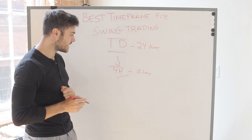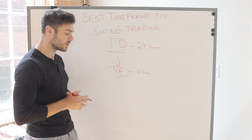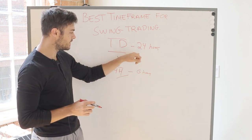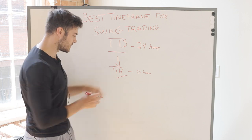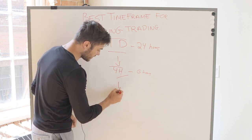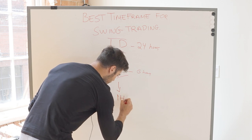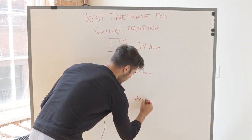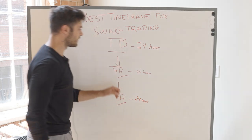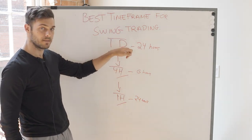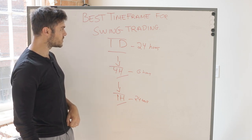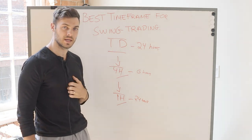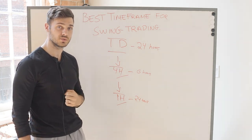Then the swing trader drops down into the four-hour time frame, getting six bars per day. From there you can drop down one more time frame into the one-hour time frame, which gives you 24 bars per day. This is the time frame sequence — the multiple time frame analysis — that the majority of swing traders will use.